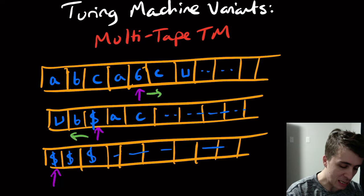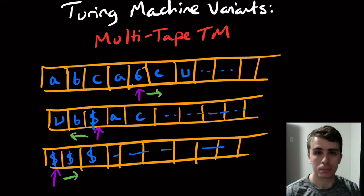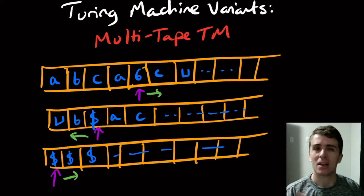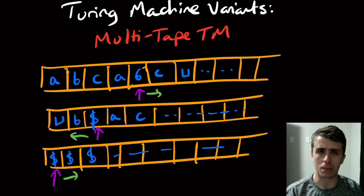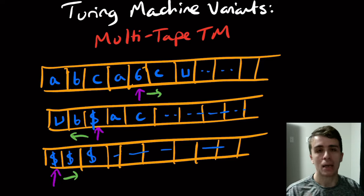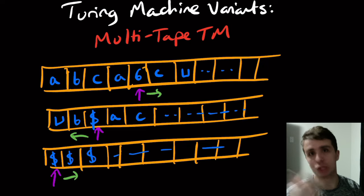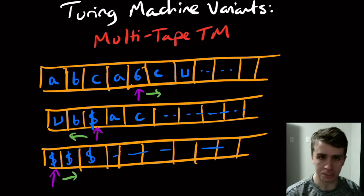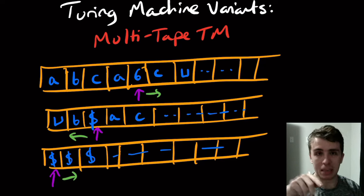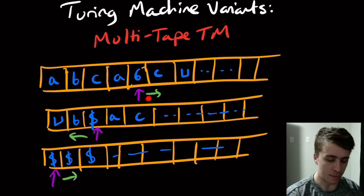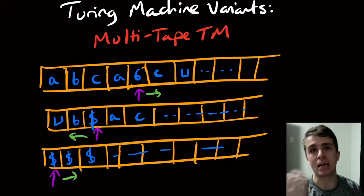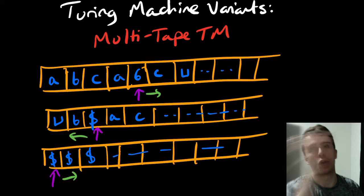Each of the tape heads has independent movement, so each can move either left or right. I've talked about stay-put Turing machines before, so let's just assume it's lefts and rights only, and then we'll show that this is equivalent to the standard model. If we wanted to incorporate stay-puts, we could — Sipser incorporates them right into this model — but for simplicity we can assume it doesn't happen, since we can always make a conversion.